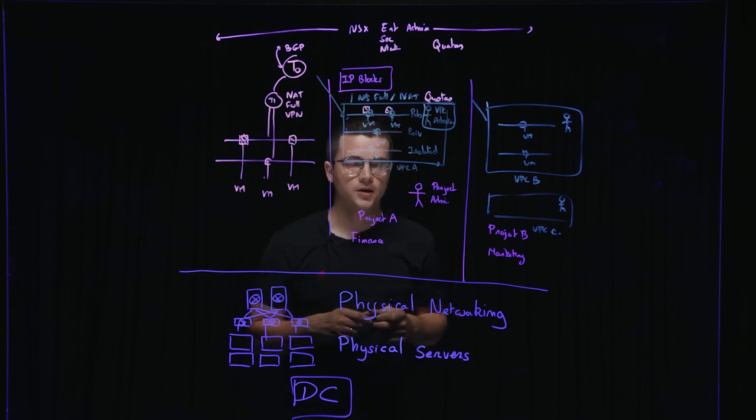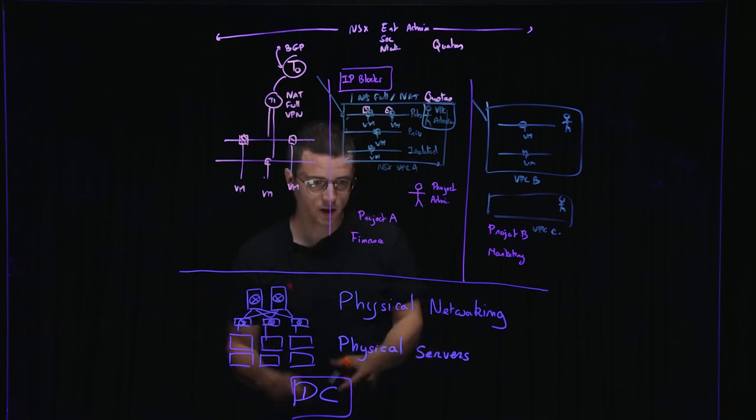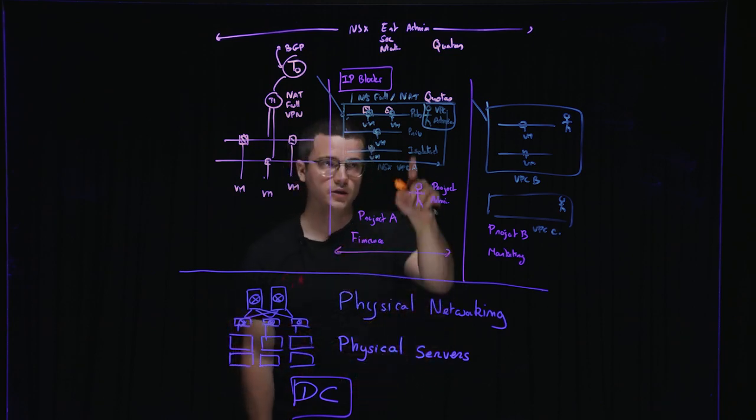So if he wants to create some security profiles applying first, like provider rules to those environments, he can. And then delegate the micro-segmentation, the different rules which are very close to the application, very specific to the user who knows best, the user of the business line, either the project admin who can create rules within the project, or the VPC admin who creates rules within the VPC.